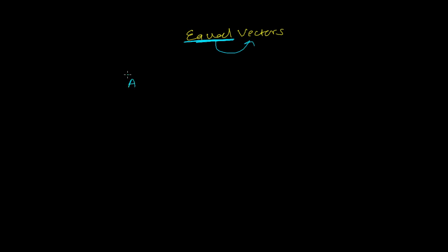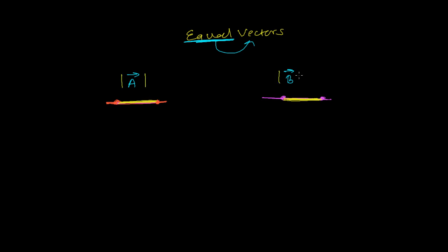Let's say I have vector A and vector B. Let me draw vector A here — starting at this point and ending at this point. The yellow colored length of vector A and the yellow colored length of vector B both have the same length, same size. So any two vectors having the same magnitude means magnitude of A equals magnitude of B.